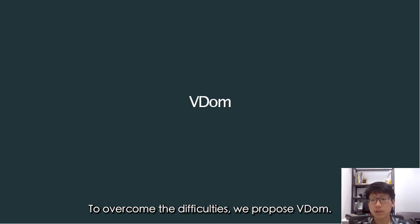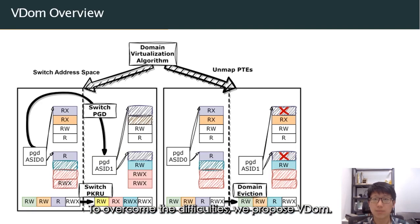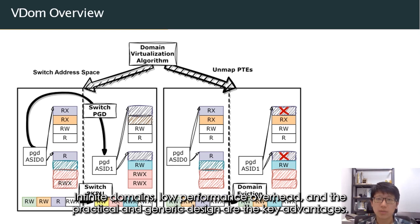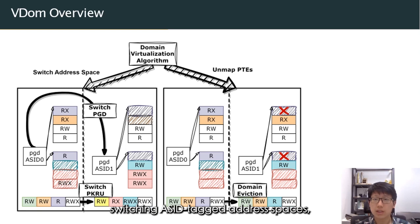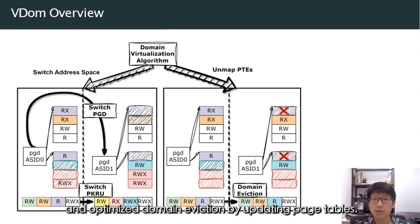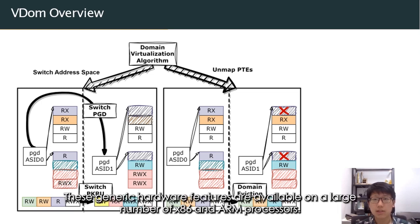To overcome these difficulties, we propose VDOM. Infinite domains, low performance overhead, and a practical and generic design are the key advantages of VDOM. To offer infinite yet efficient virtual domains, VDOM combines hardware memory domain, switching ASID-tagged address spaces, and faster domain eviction by updating page tables. These generic hardware features are available on a large number of x86 and ARM processors.